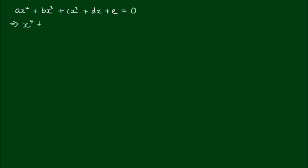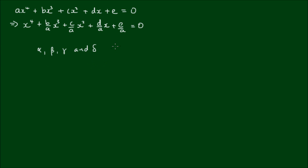So I get x to the fourth plus b/a x cubed plus c/a x squared plus d/a x plus e/a is equal to zero. Let's suppose that the constants that satisfy this equation are alpha, beta, gamma, and delta — these are the roots or zeros. This means I can write this equation as the product of (x minus alpha)(x minus beta)(x minus gamma)(x minus delta).